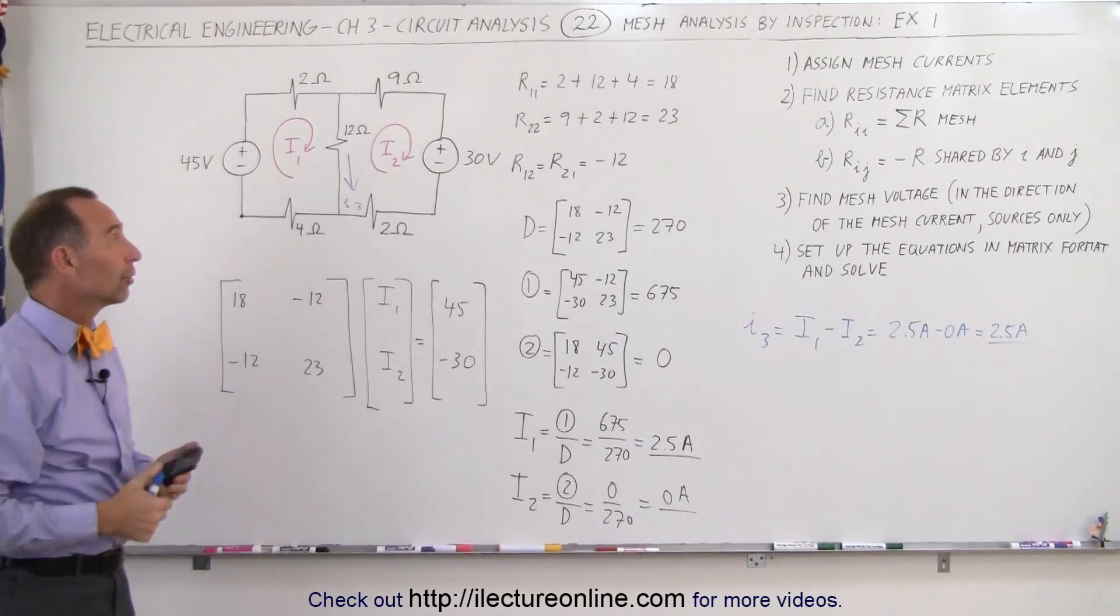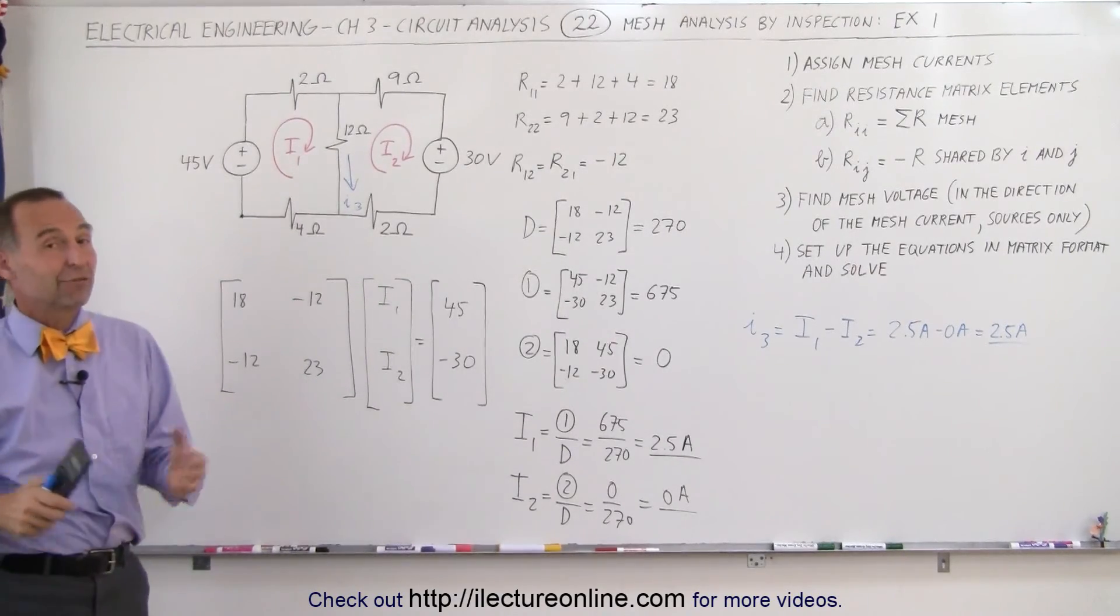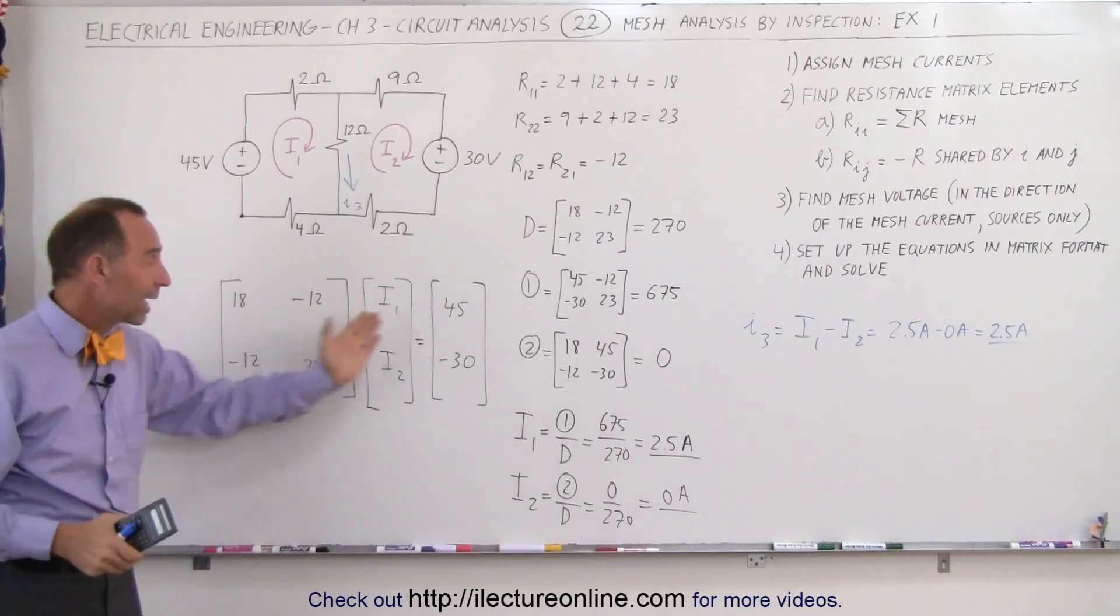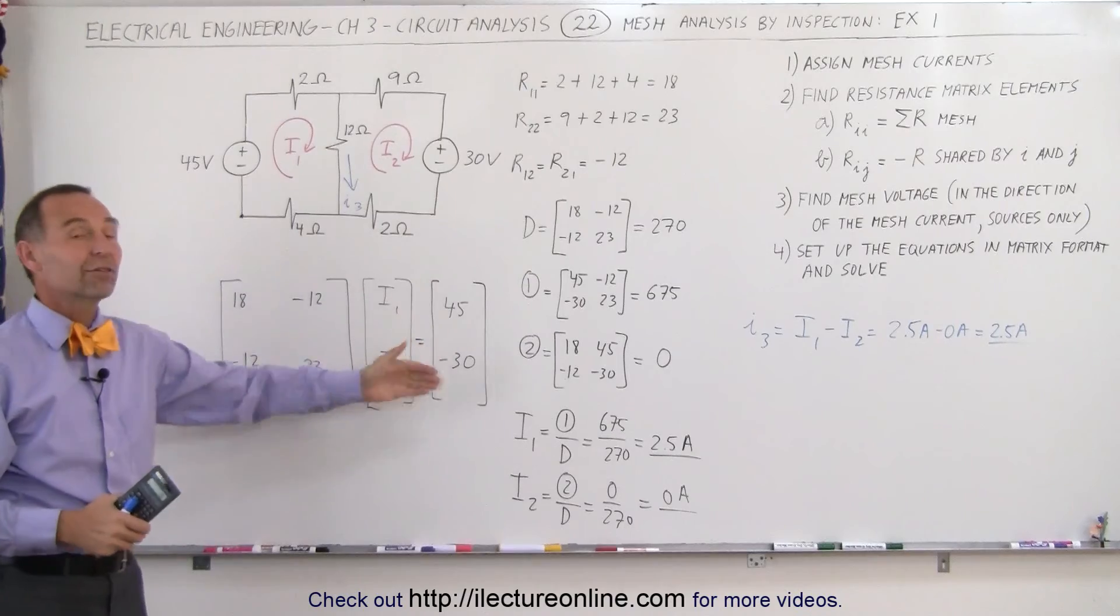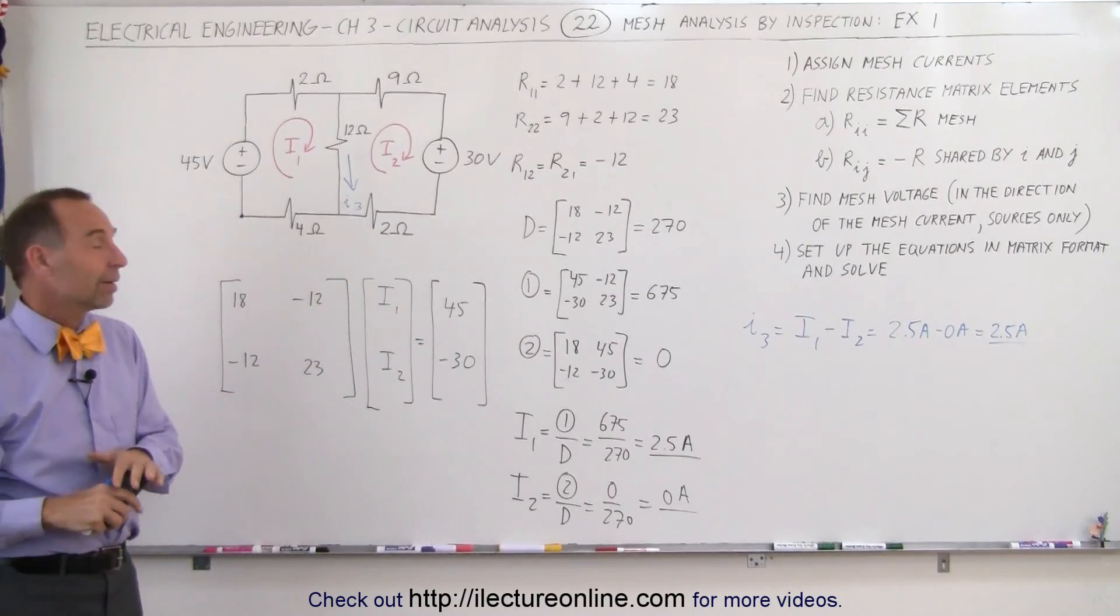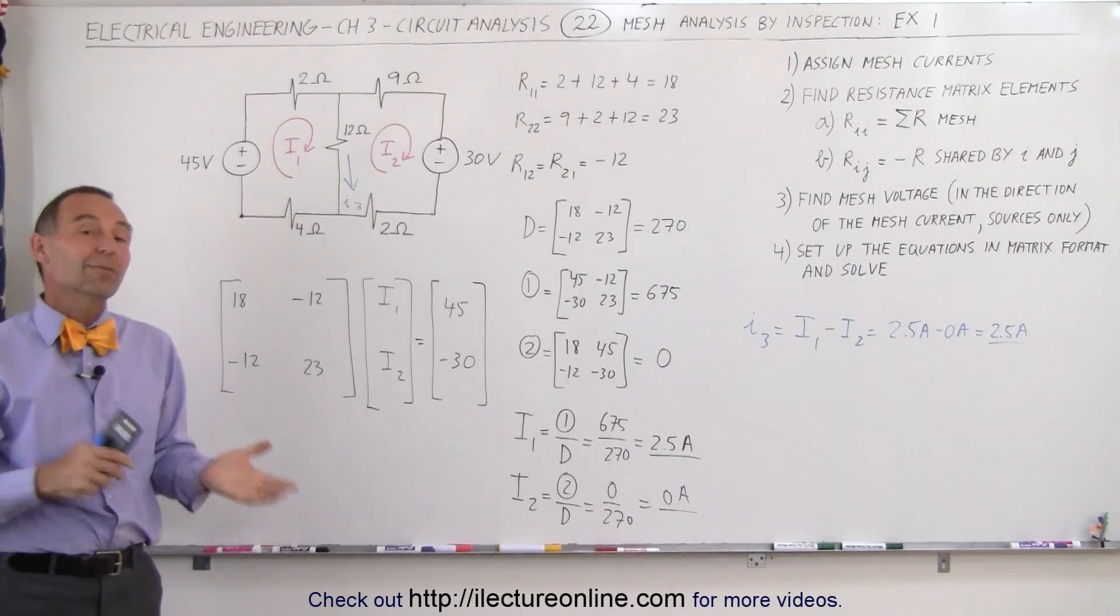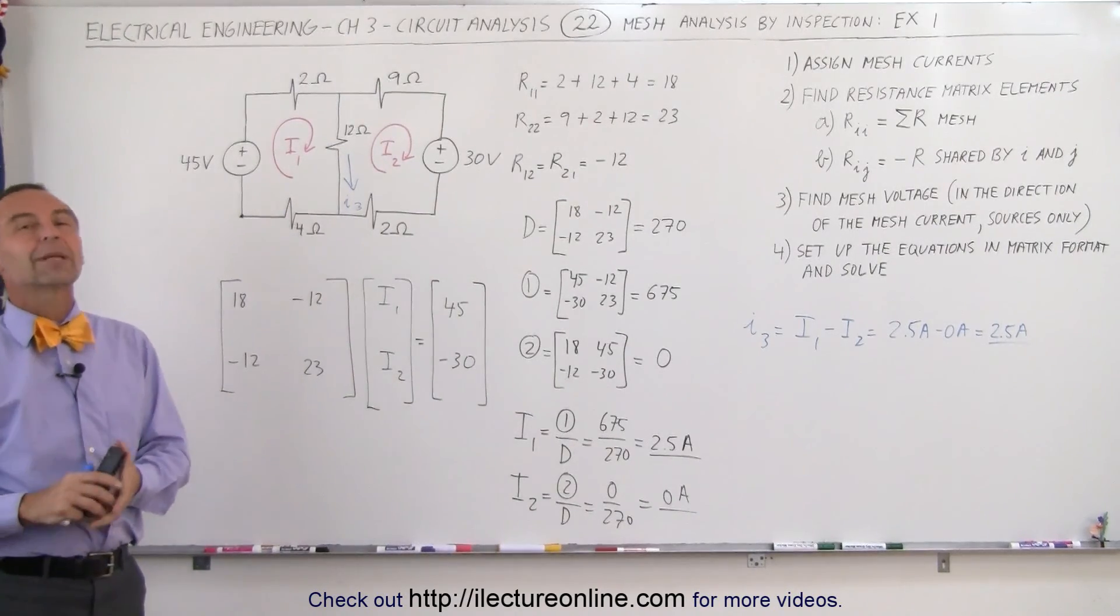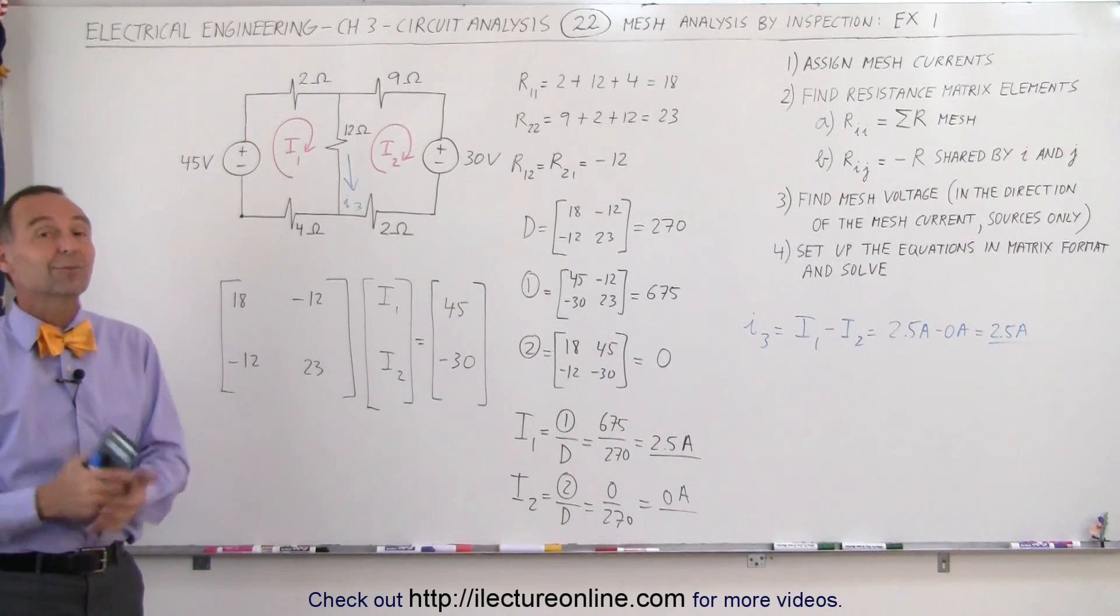And that's how we find the various currents in the circuit by using the mesh analysis by inspection. It's a very quick method. You very quickly add up the resistances to come up with the resistance matrix. It's very easy to find the voltage matrix, and it's fairly easy to work out a matrix pattern like this or equations in matrix format like that. Now of course that's a simple example. We'll show you some more complicated examples later on. But that's how we use this method, and it's a really nice method to use.